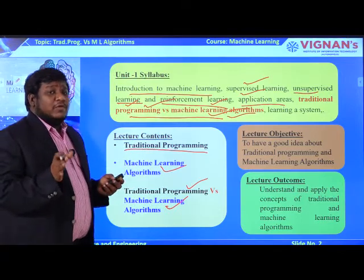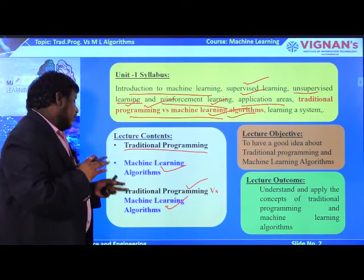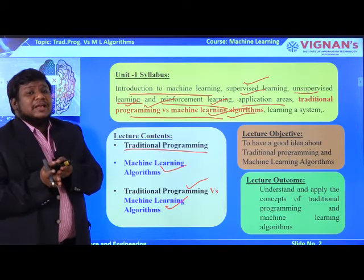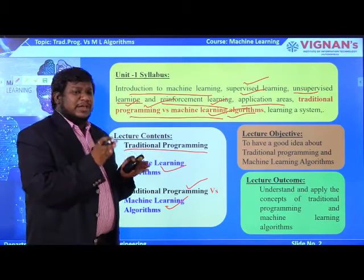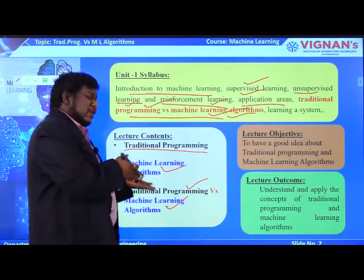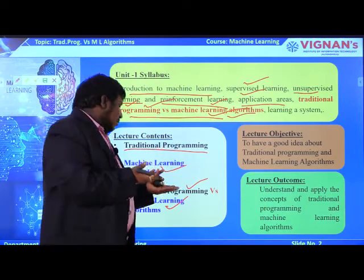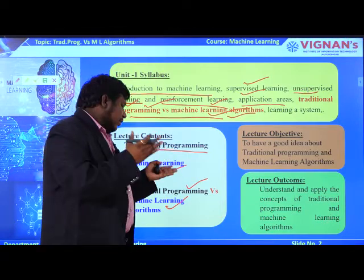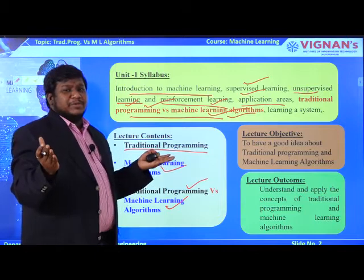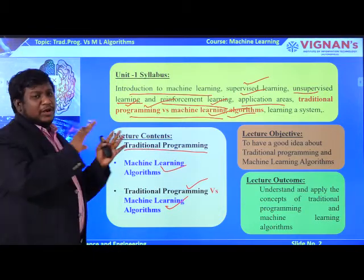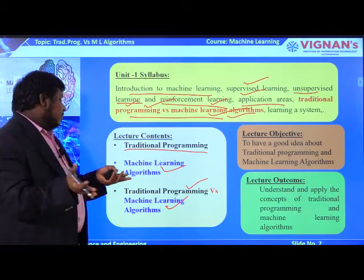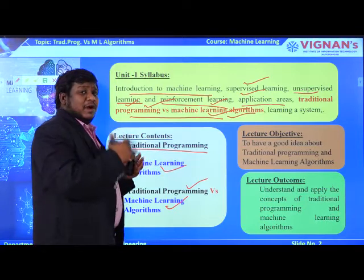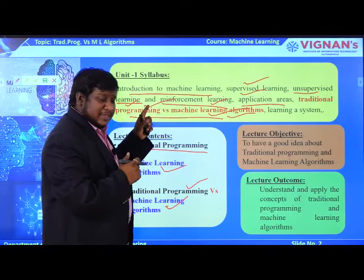We will look at the methods followed in traditional programming models and the various algorithms available in machine learning, and how we differentiate them. Traditional programming has been around for 50 to 100 years, whereas machine learning started in the 1980s — nearly an 80 to 100 year gap. So obviously there should be some difference between the programming methods followed in both these types of environments.